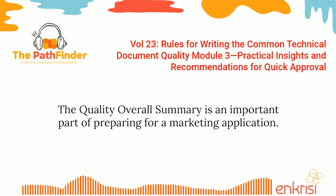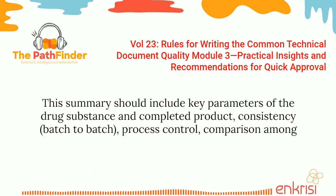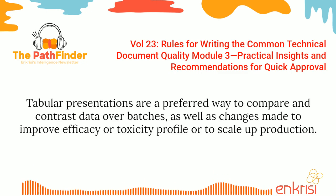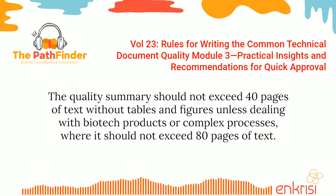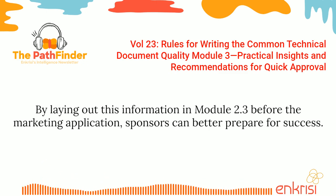The Quality Overall Summary should include key parameters of the drug substance and completed product, consistency, process control, comparison among different products throughout development, and establishing the connection between clinical drug supplies and the proposed to-be-marketed product. Tabular presentations are a preferred way to compare and contrast data over batches, as well as changes made to improve efficacy or toxicity profile or to scale up production. The Quality Summary should not exceed 40 pages of text without tables and figures unless dealing with biotech products or complex processes, where it should not exceed 80 pages. By laying out this information in Module 2.3 before the marketing application, sponsors can better prepare for success.